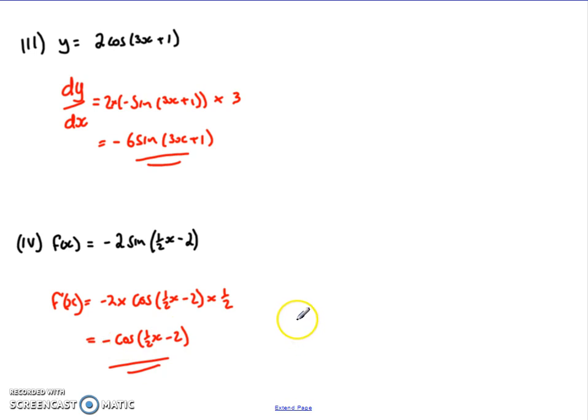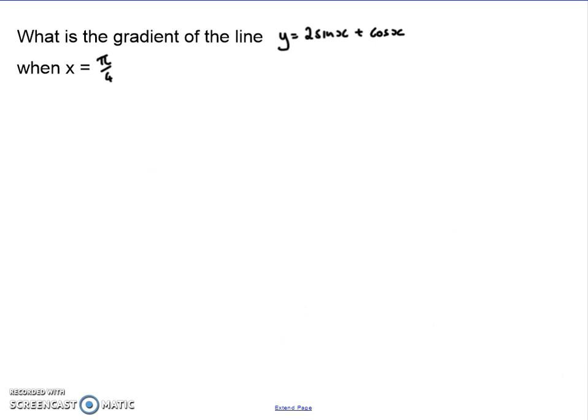So that's just simple differentiation. What about when we apply it to something? So what is the gradient of the line y equals 2 sine x plus cos x when x equals pi over 4? Now, when we're thinking of applying it, there are several words that associate instantly, or several phrases that associate instantly with differentiation.